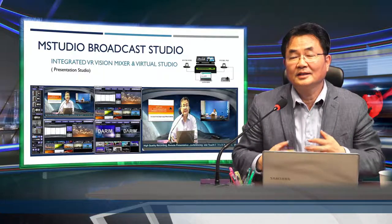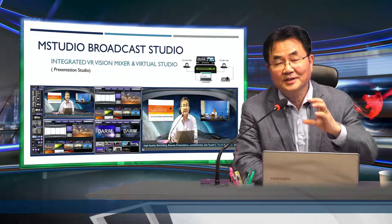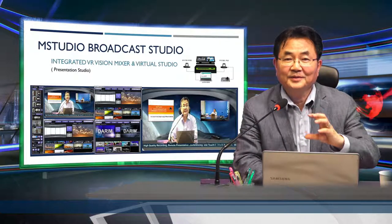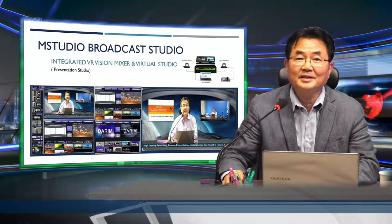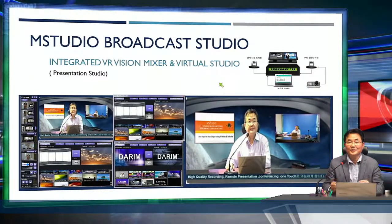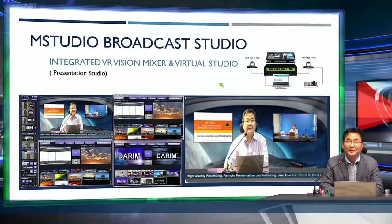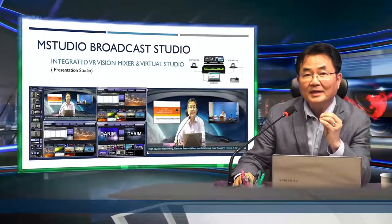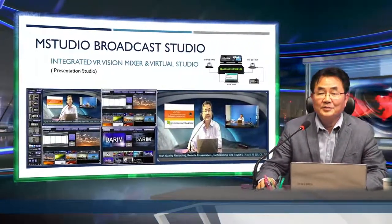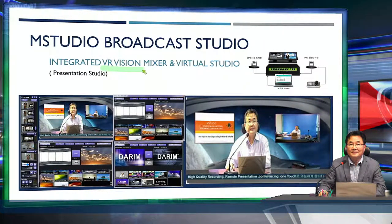So we try to bring the switch mixer, encoder, and also broadcasting equipment into just one system. This M-Studio system, as I show here, is an integrated broadcast station where you can load any inputs and show whatever you want very easily without any professional people operating the machine. The first approach we make is a multiple switcher function inside, and we are also trying to make a virtual studio - that's why we call this a vision mixer.